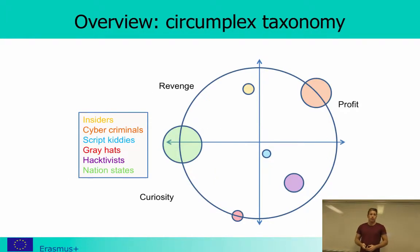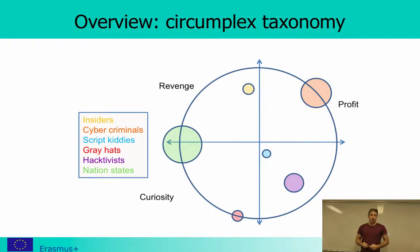In the overview, insiders are a small group working either for revenge or profit. Cybercriminals are a large group mainly interested in profit. Hacktivists are more motivated by curiosity, political goals, or recognition. Script kiddies are the smallest group — guys sitting in the basement drinking cola and eating pizza, trying out what they read off the net, and usually not getting anywhere. Greyhats are again more curious and recognition-driven. Nation states are a large group, usually spying on each other for curiosity or revenge. Understanding which type of attacker is most likely to target you is quite an important part of your defense.